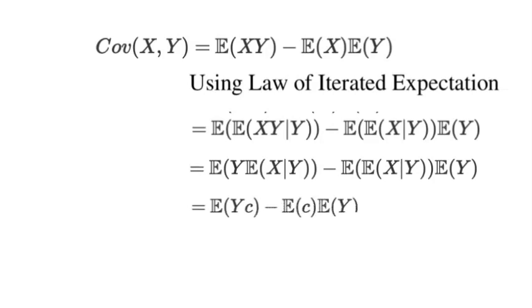So we are going to get expected value of Y times c minus expected value of c times expected value of Y, which is going to give us zero.